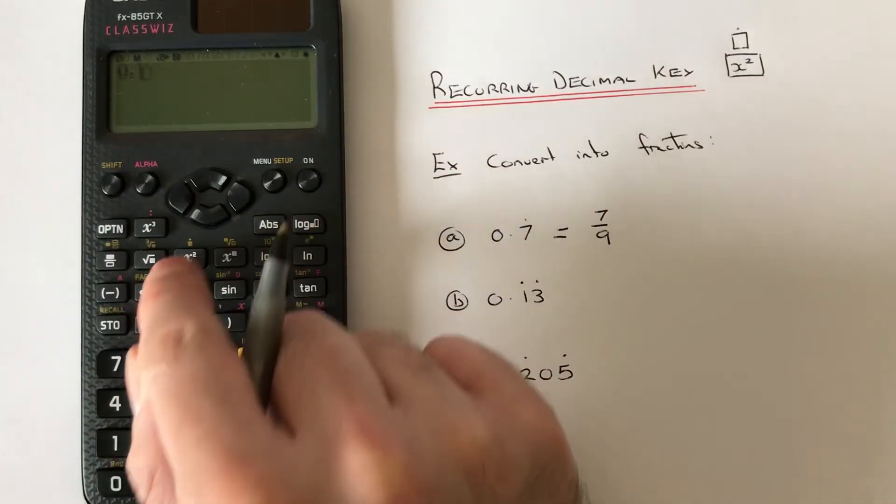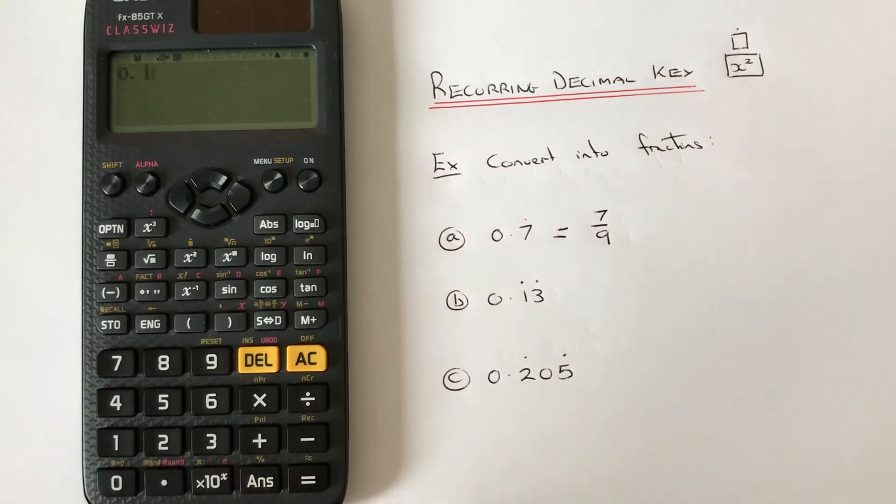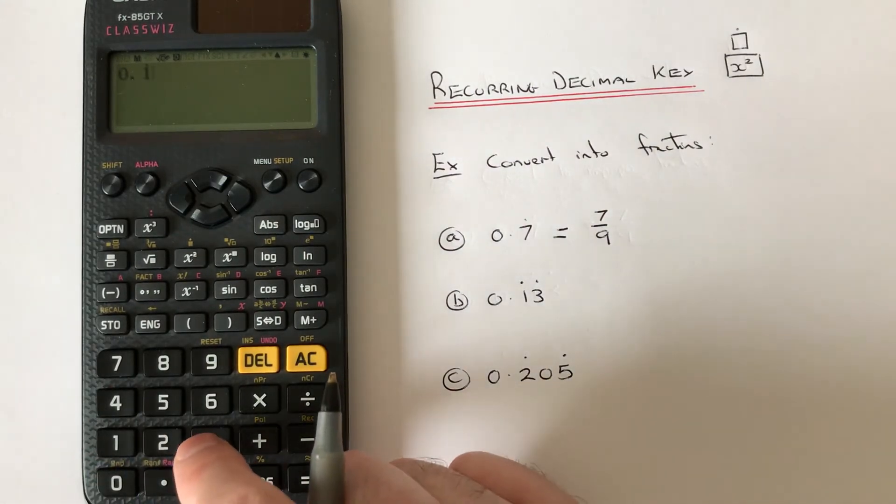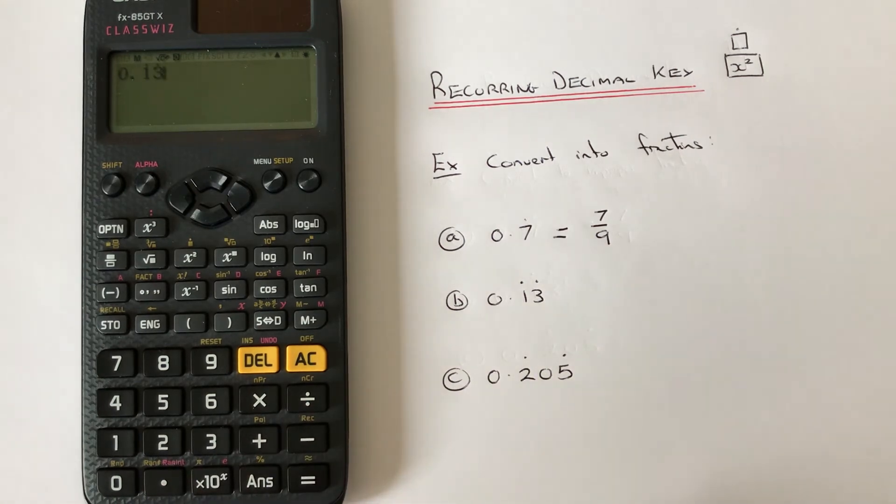Then press 3 and we'll get another dot on that 3. If you press equals, we get 13 over 99.